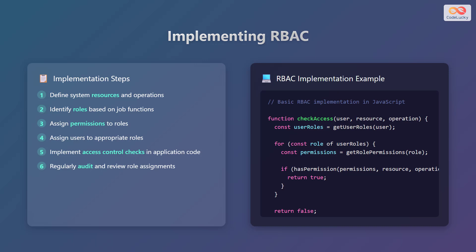Implementing RBAC involves a series of steps. First, define the system resources and operations that need to be protected. Next, identify the roles based on job functions within the organization. After this, assign permissions to these roles. Once the roles are set up, assign users to the appropriate roles. Implement access control checks within the application code to enforce the RBAC policies. Regularly audit and review role assignments to ensure they remain accurate and effective.